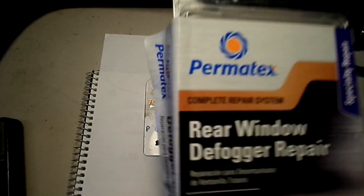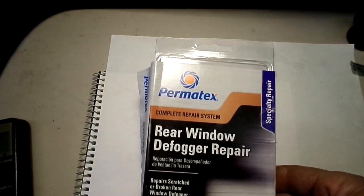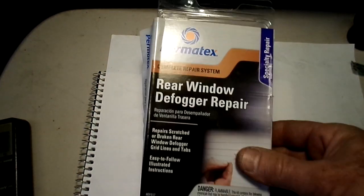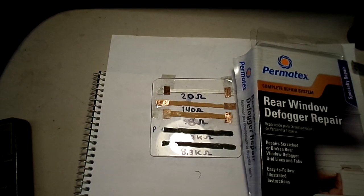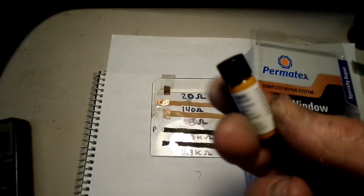So I first picked up some of the Permatex conductive glue that's designed to fix the rear window heater grid on your car. You can pick this up at any auto parts store. It came in two parts, but the only part I needed was the little bottle of conductive glue.